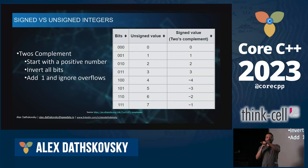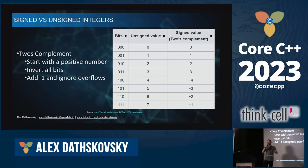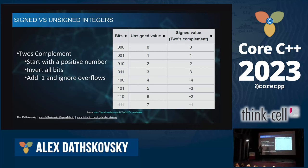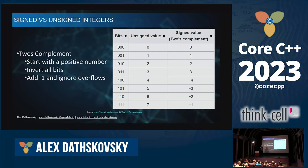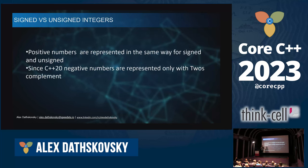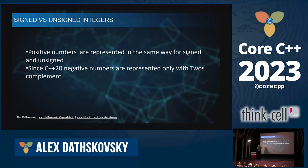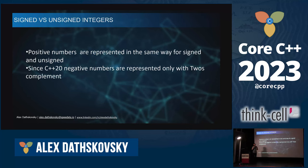Two's complement is what most compilers use today. To compute it, you take the one's complement and add one. This gives more representation for negative numbers — 4 in unsigned becomes minus 4 in two's complement, and minus zero becomes minus 1. Positive and negative numbers are represented the same way in both. Since C++20, two's complement is mandated by the standard — finally!